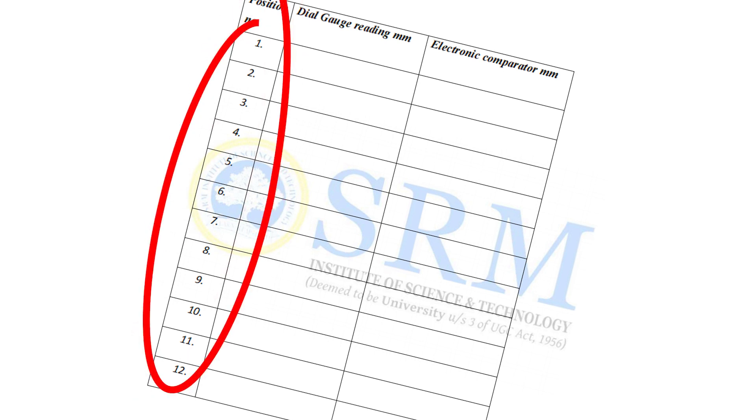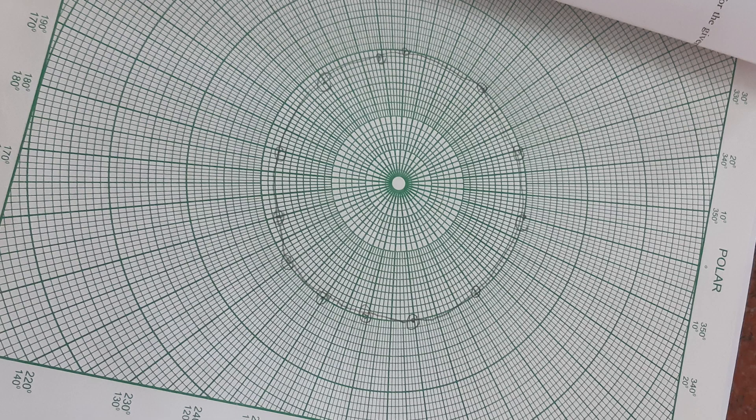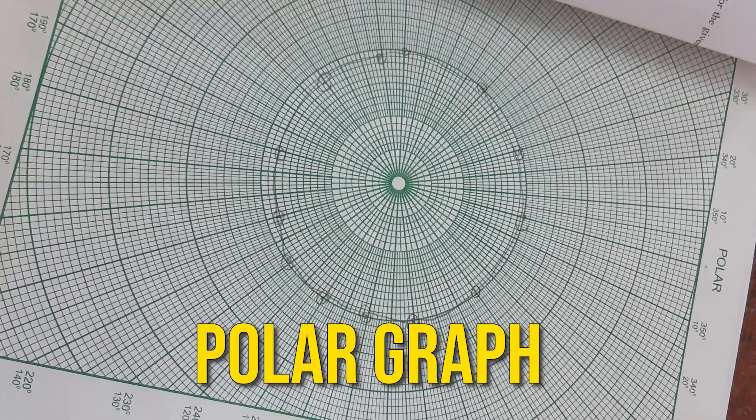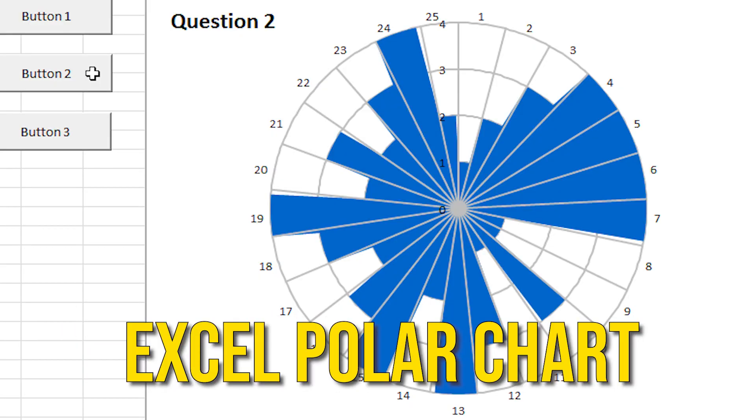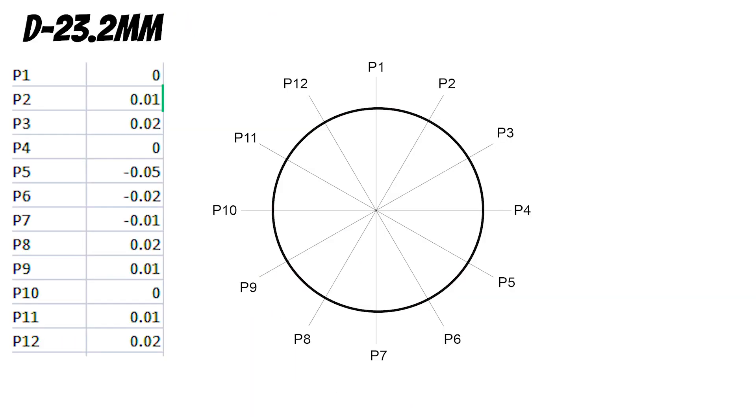After taking all the 12 positions, we have to plot these values in polar graph or in Excel chart. First draw the master circle by considering the workpiece diameter. After that plot the deviations of the 12 positions.